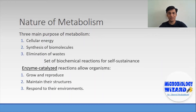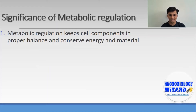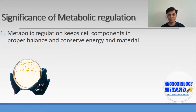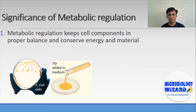Metabolism also provides a striking similarity between basic metabolic pathways among diverse groups of creatures. The first significance of metabolic regulation is that it keeps all cell components in proper balance and conserves energy and material. For example, when an E. coli cell is grown in nutrient agar medium supplemented with glucose, the organism utilizes glucose and synthesizes all essential components. If tryptophan is then added into the medium, E. coli will stop producing tryptophan through end product inhibition.